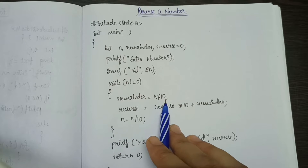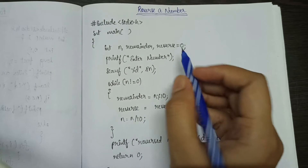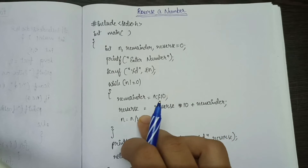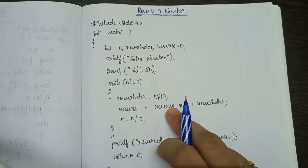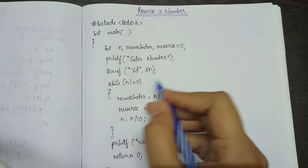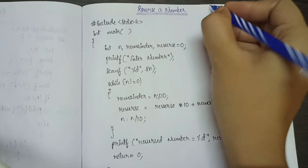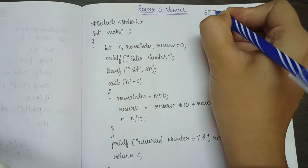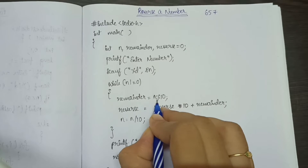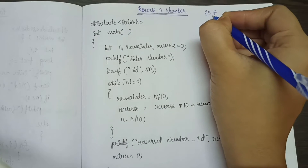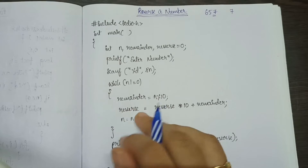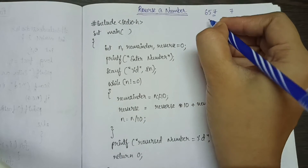While n is not equal to 0, reminder is equal to n modulus 10, which gives the last digit of a number. That reminder will be added to the reverse value multiplied by 10. Then n is equal to n divided by 10, so n is updated.